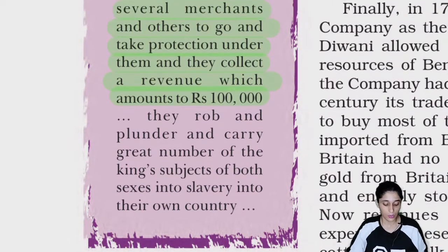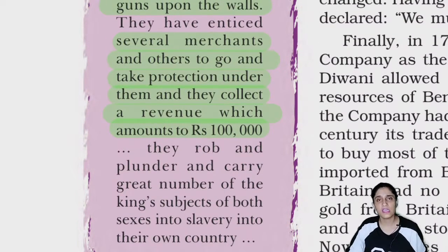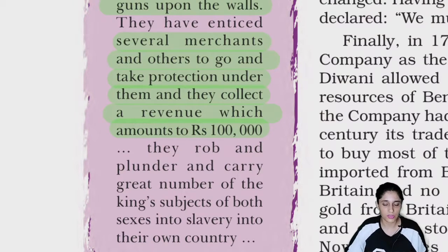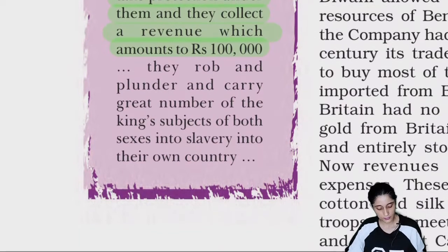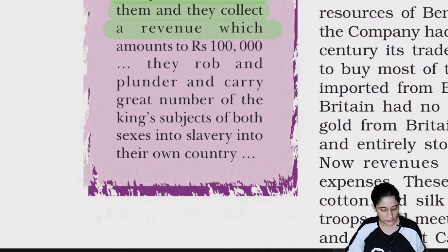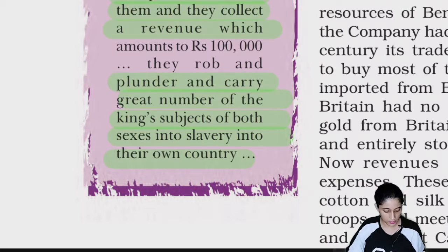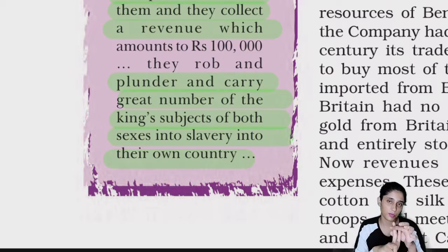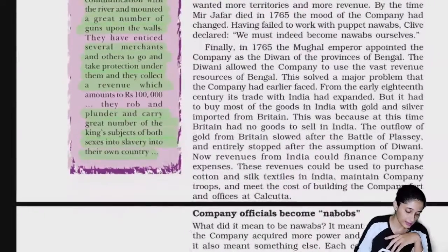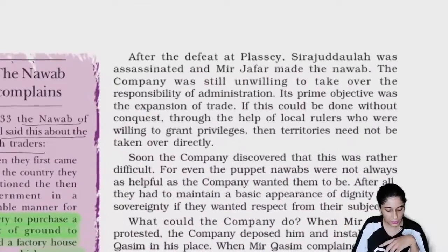They have enticed several merchants and others to go and take protection under them, and they collect revenue which amounts to 1 lakh rupees from 3 villages — jo ki basically sarkar se chori hai. They rob and plunder, and carry great numbers of the king's subjects of both sexes into slavery into their own country — yani dono genders ke, male aur female, dono ke slaves ko apne desh mein le jaate hain. Yeh wala jo Battle of Plassey ke baad hua — Sirajudolla vagira ke saath — yeh next class mein discuss karenge.